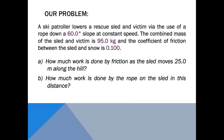A ski patroller lowers a rescue sled and victim via the use of a rope down a 60-degree slope at a constant speed. The combined mass of the sled and victim is 95 kilograms and the coefficient of friction between the sled and snow is 0.1. How much work is done by friction as the sled moves 25 meters along the hill, and how much work is done by the rope on the sled in this distance?